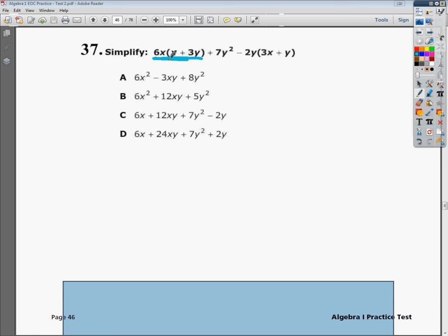First, we're going to distribute that 6x to everyone inside. We got 6x times x, which gives us 6x². Because we have two x's, we have to have a square. Then we do 6x times 3y, so that gives us plus 18xy. I always write them in alphabetical order; it's just easier.